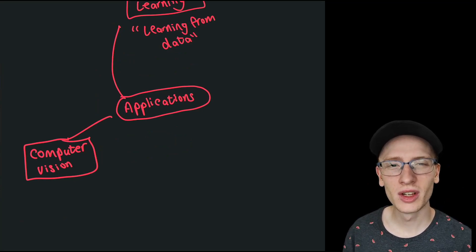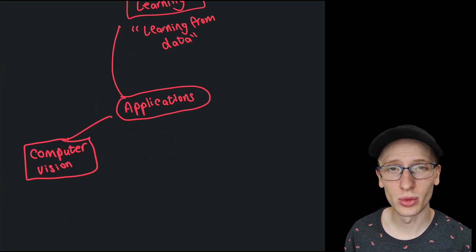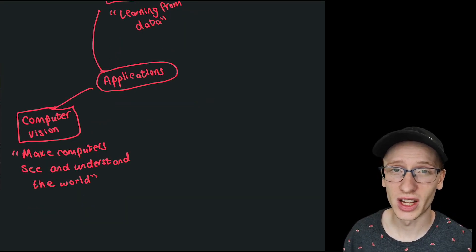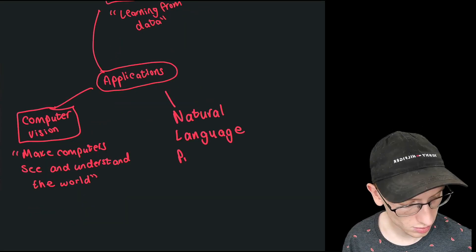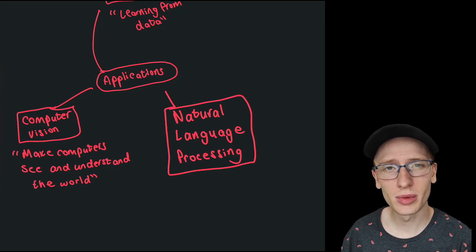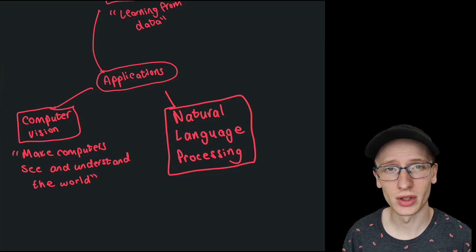Computer vision really just means making computers see and understand the world. Another very common application of machine learning is called natural language processing. Natural language processing, or NLP, really just means make computers understand language, either text or spoken.